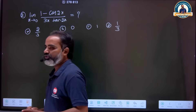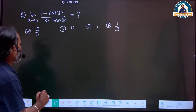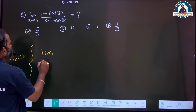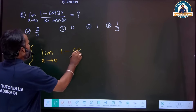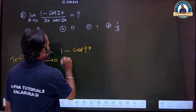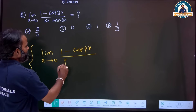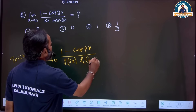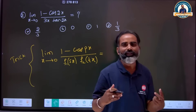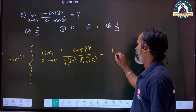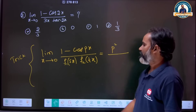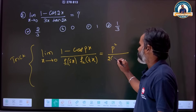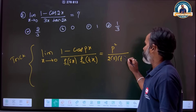The next problem: limit x tends to 0 of (1 minus cos px) divided by a function. There are 7 functions: f1 is sx, and tx in the denominator. The x-coefficient squared in the numerator, divided by 2, multiplied by the x-coefficient of the denominator — that gives the answer.